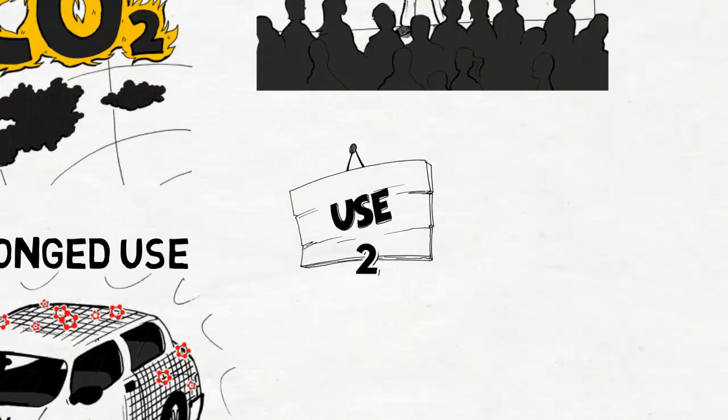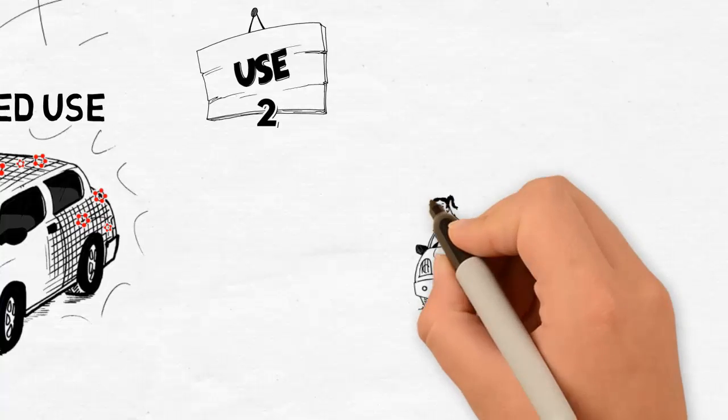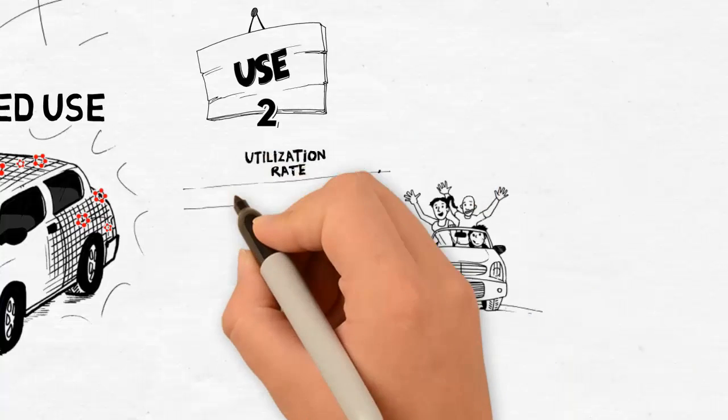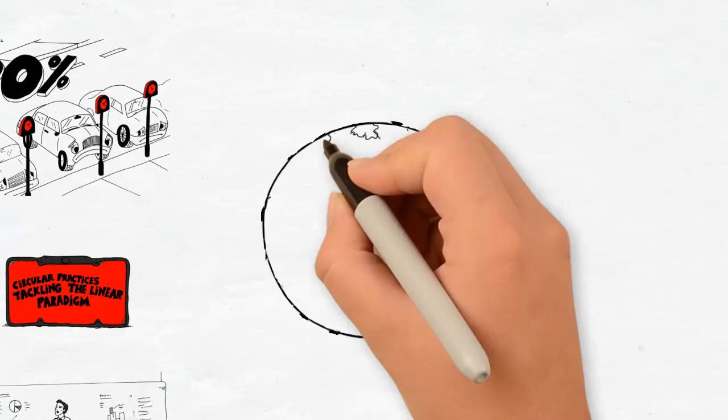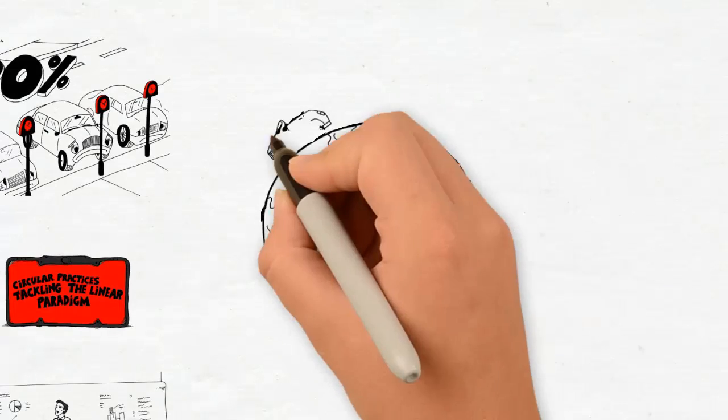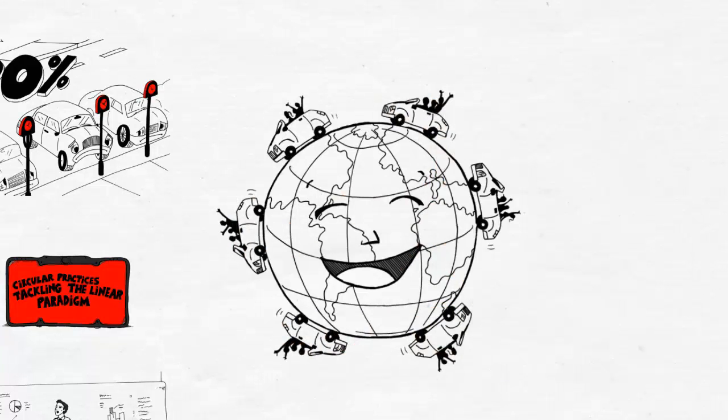Two: Use. At the use phase, circular firms are tackling current rock-bottom utilization rates, offering car sharing services to consumers. Car sharing users are growing at breakneck speed and will reach 25 million in 2020 according to some estimates.